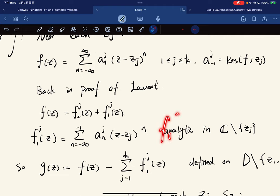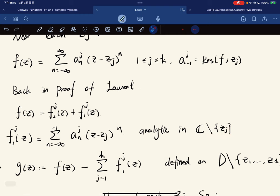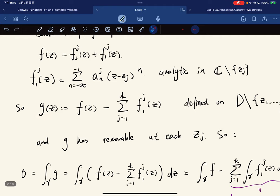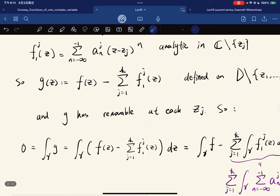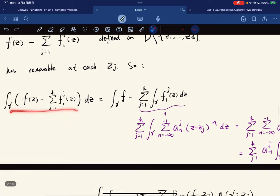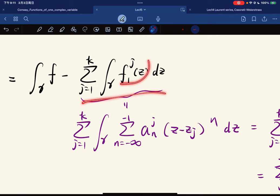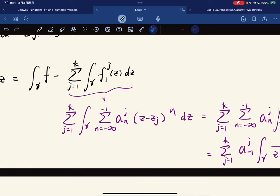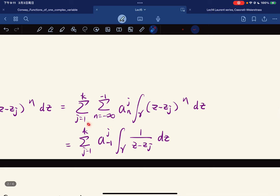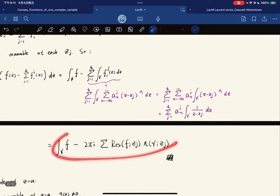And the rest, like f2, I mean f12, f13, they are analytic at z1, so they are a power series, so it doesn't really matter. Which means that if you just look at the power series expansion of g again, g has a removable at zj. So we can compute its integral and just plug in. And from here we use the uniform convergence and again we have this.